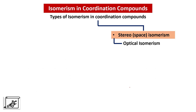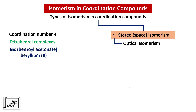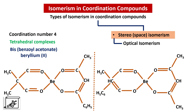Let us see some examples, starting from coordination number 4 — tetrahedral complexes. There are very few tetrahedral complexes that show optical isomerism. Here I am considering bis(benzoylacetonate)beryllium(II). To exhibit optical isomerism, it is very important that the two isomers should not have any symmetry — no center of symmetry, no line of symmetry, and no plane of symmetry. In this case the two atoms at the end of the bidentate ligand are different, and in the mirror image also the two atoms are different. These two isomers are non-superimposable mirror images — enantiomers — and they do not exhibit any line, plane, or center of symmetry. Therefore these two are optically active.